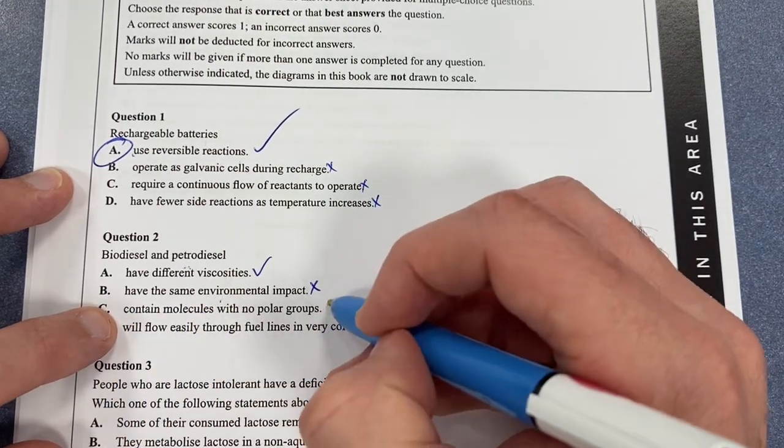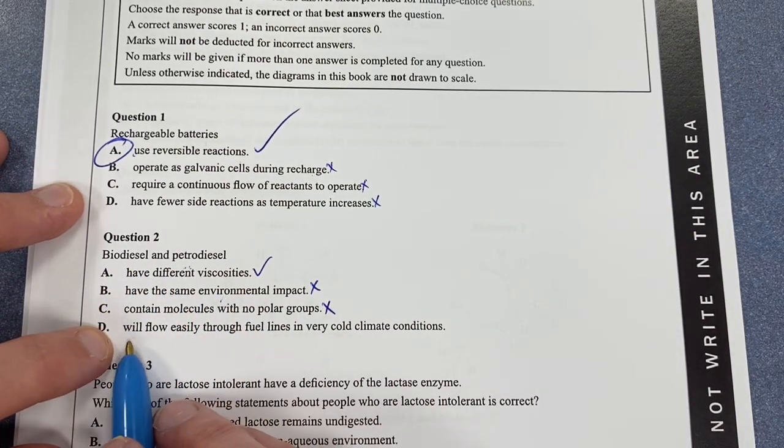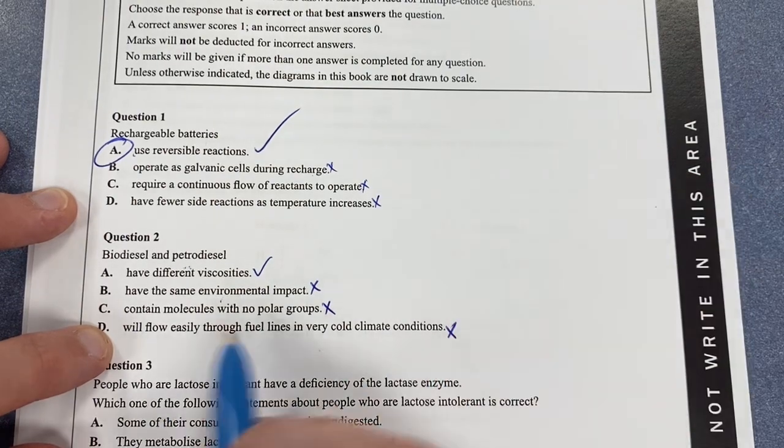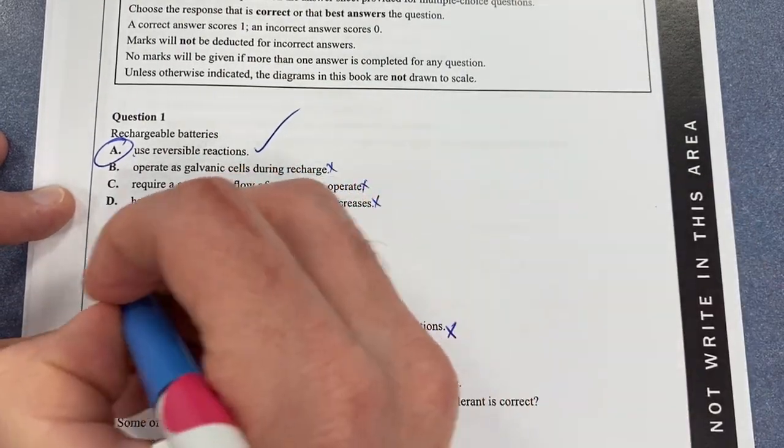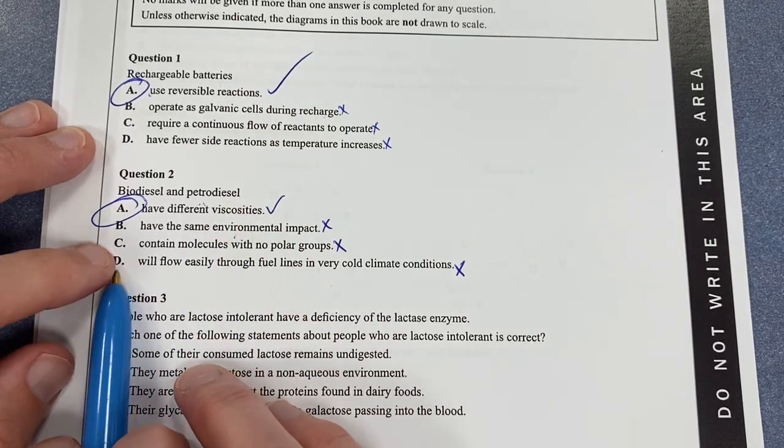Contain molecules with no polar groups - that's incorrect. Biodiesel is a methyl ester, so it has a polar functional group. Will flow easily through fuel lines in very cold climate conditions - no, only petrodiesel does that. So the answer there is A, have different viscosities, which makes D redundant anyway.